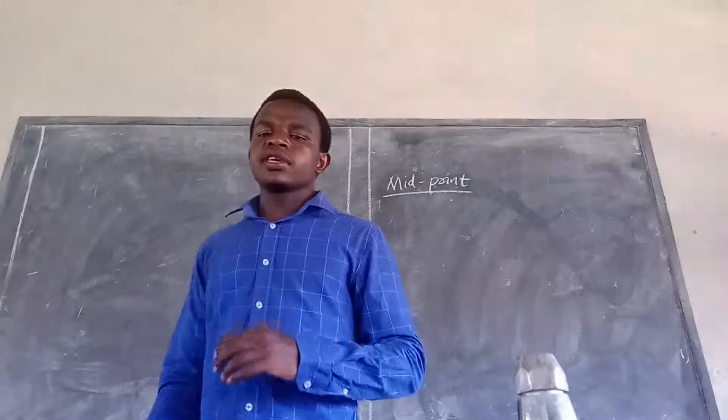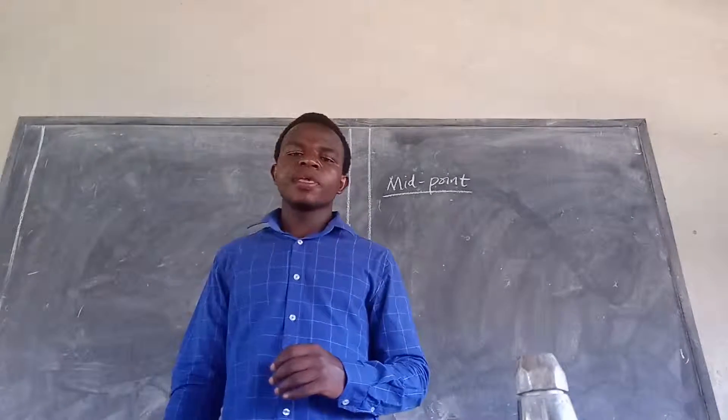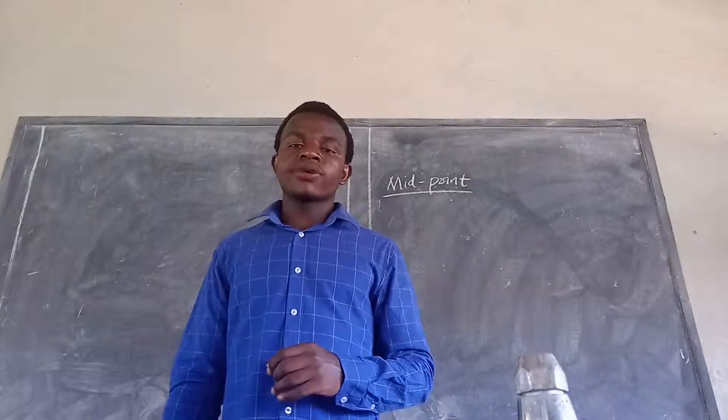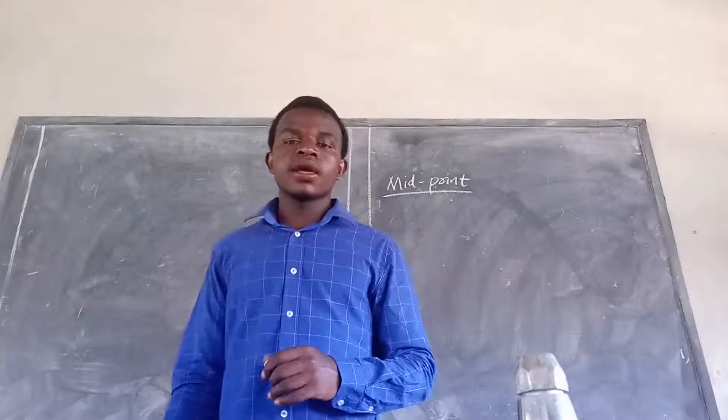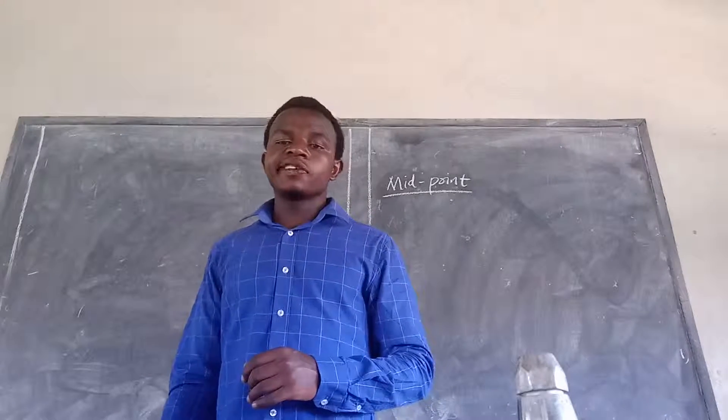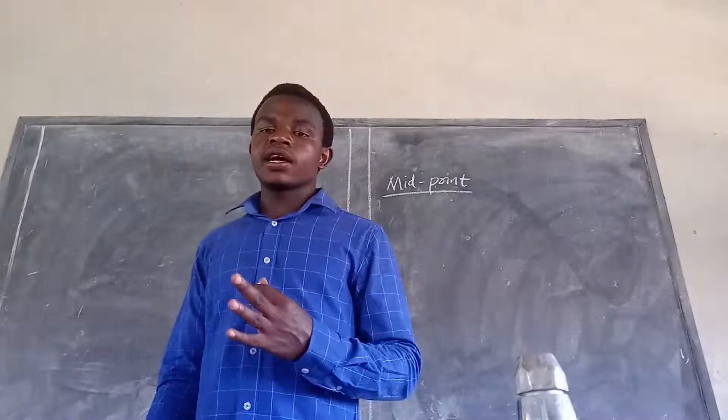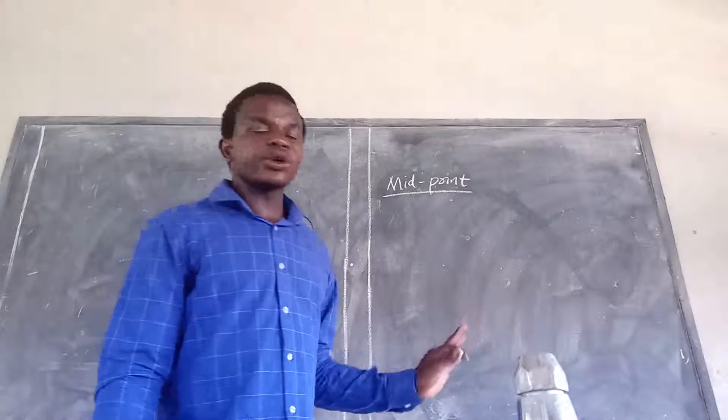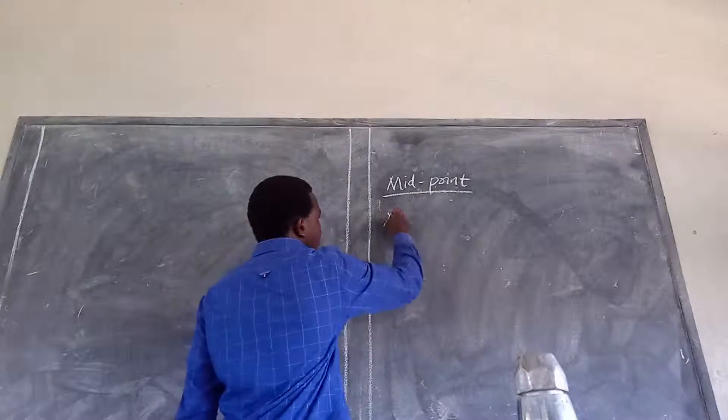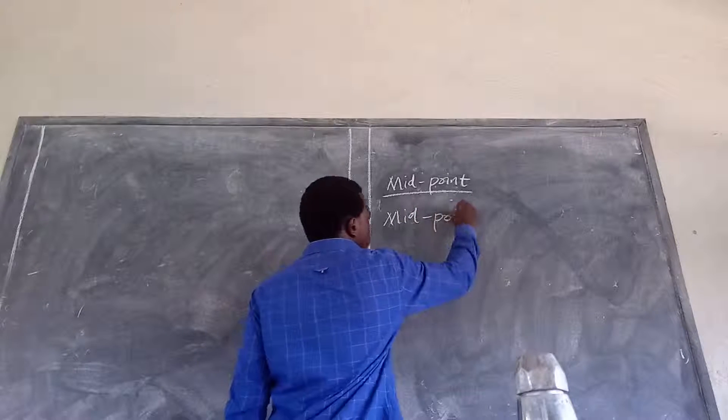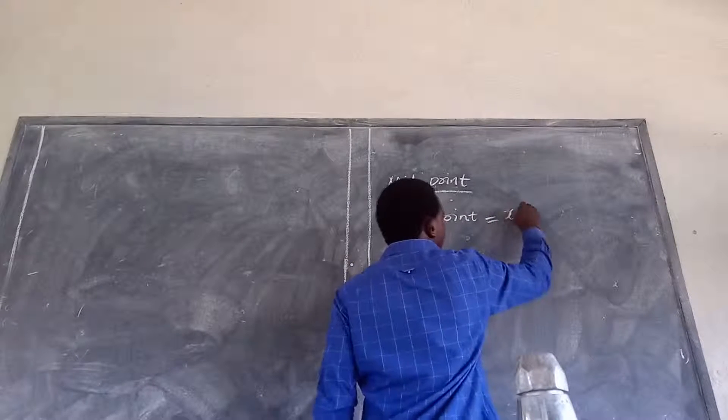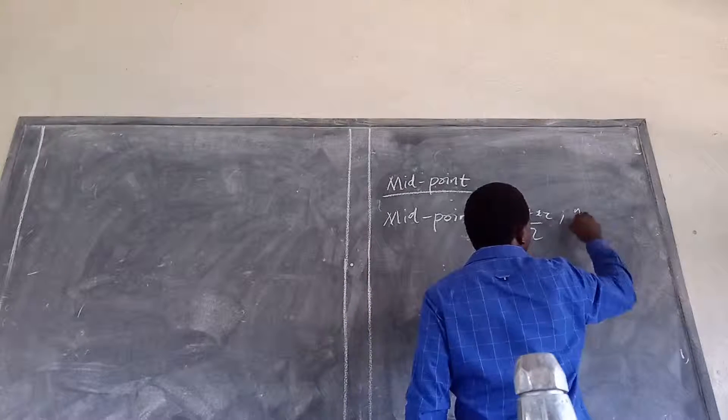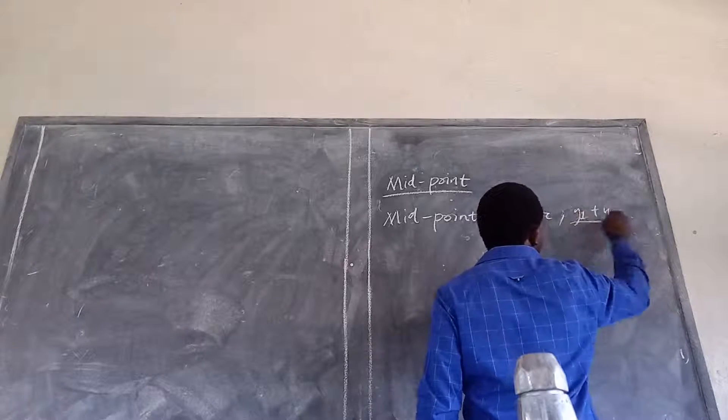you use the formula which says midpoint is equals to x1 plus x2 divided by 2, comma y1 plus y2 divided by 2. So I am just going to write down this formula on the chalkboard. Midpoint is equals to x1 plus x2 over 2 comma y1 plus y2 over 2.